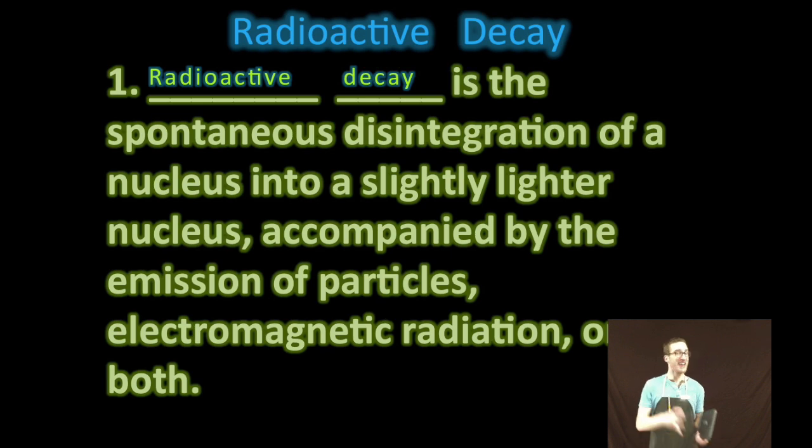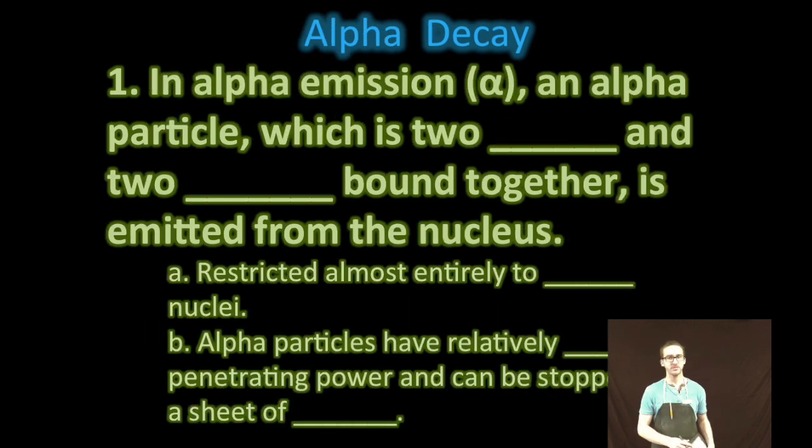It's an unstable or radioactive nuclei like this that's going to undergo what's called radioactive decay. Now radioactive decay is just the spontaneous disintegration of a nucleus into a slightly lighter nucleus, accompanied by the emission of particles, electromagnetic radiation, or both. And again, the goal of radioactive decay is to create more stable nuclei.